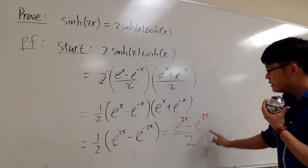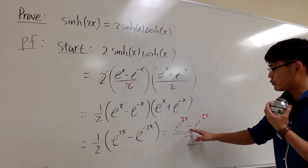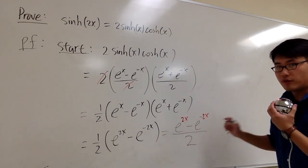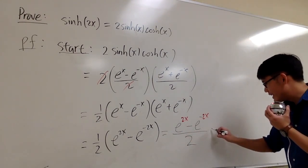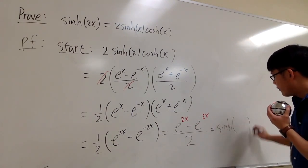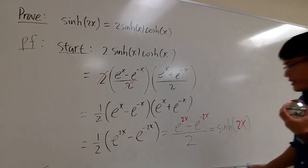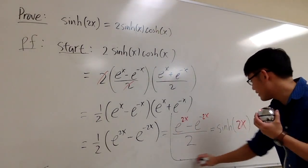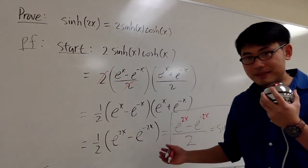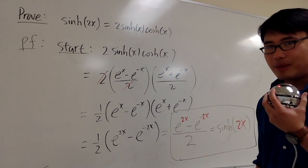This is in the form of the sinh function — we have e to something minus e to the negative of the same thing, over 2 — so this is actually sinh(2x). And we are done. This is how we work with the hyperbolic functions.